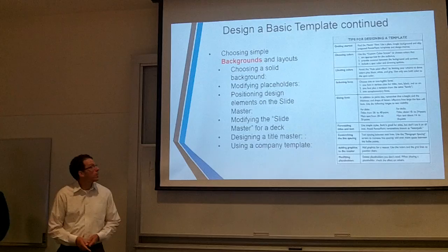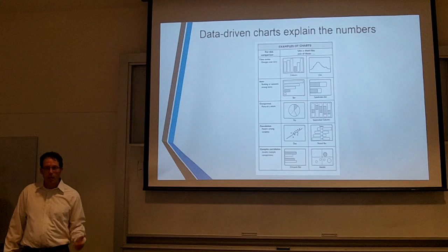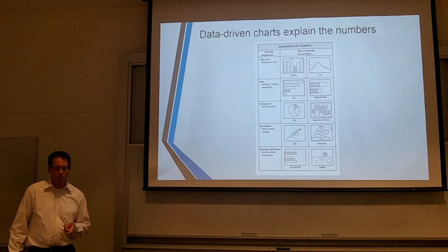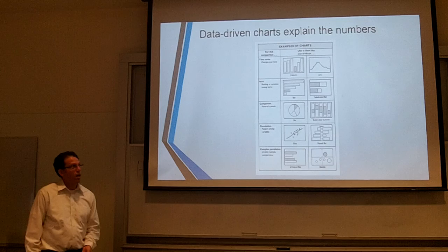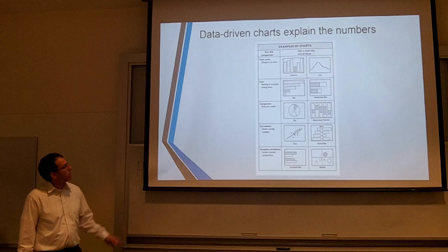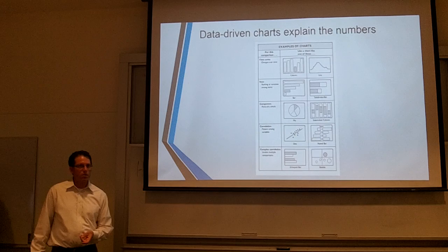Now, thinking visually as you design — five different things to cover. The first is data-driven charts, which explain numbers. First, determine your message and what type of data you're trying to convey, then identify the comparison, and then select a chart format. A column chart is good for time with few data points. A line chart is good for comparing trends. An item chart is for ranking or variation among items. A component chart shows parts of a whole — use a pie chart when there are limited slices, six or less.